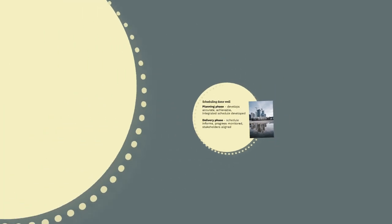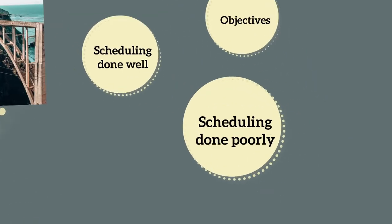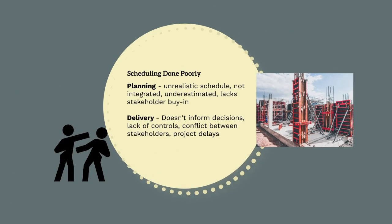When project scheduling is done poorly, it's pretty much the exact opposite of what it looks like when it's done well. During the planning phase, an unrealistic project schedule is developed that does not reflect the actual realities of the project. In the worst case, the time required to complete the project is significantly underestimated. The project team, stakeholders, and subcontractors do not review or make input into the project schedule.